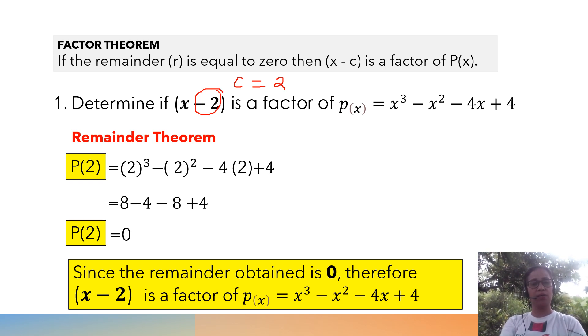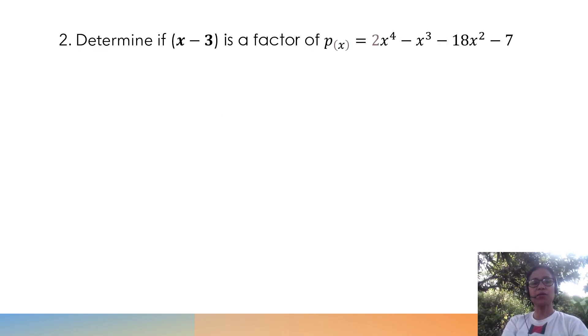Now, let's move to our second example. Determine if (x - 3) is a factor of the polynomial 2x⁴ - x³ - 18x² - 7.